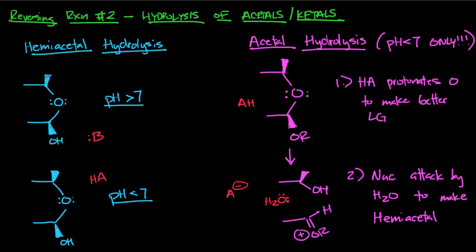Our last video involving acetals and ketals is going to talk about: let's say we have an acetal or a hemiacetal and we want to break that up and go back to the hemiacetal or go back to the aldehyde. Just like hemiacetals can form under basic and acidic pH, you can do the same thing with hydrolysis — it's a reversible reaction. On the other hand, acetal or ketal hydrolysis only happens under acidic pH.